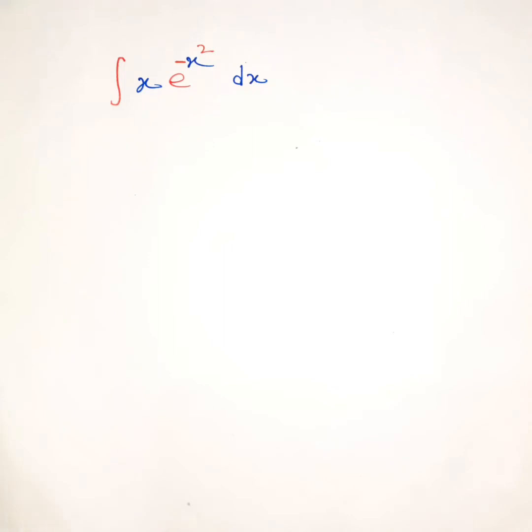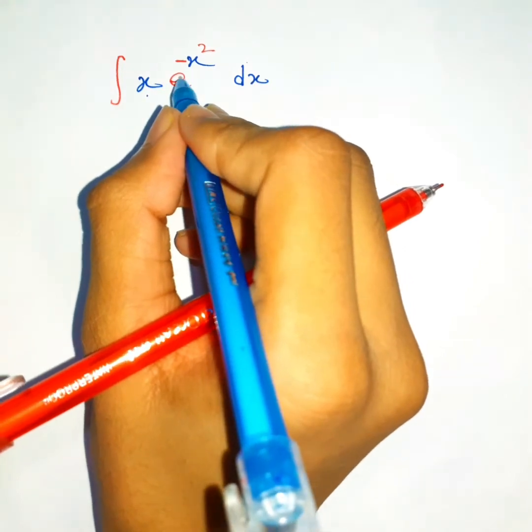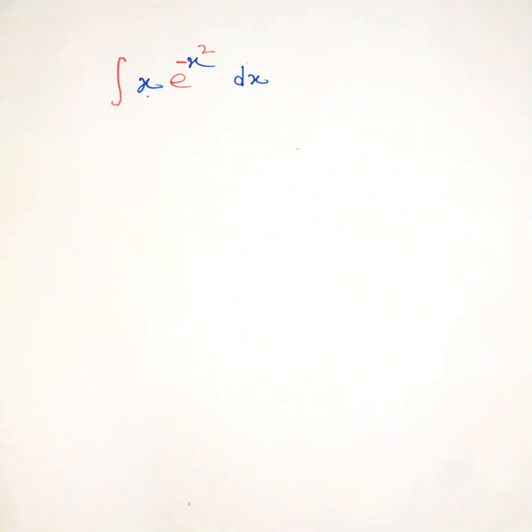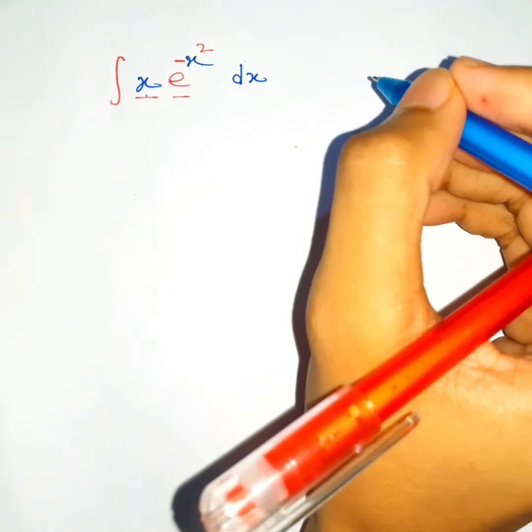Okay, thanks for watching. In this video we will be integrating x times e to the negative x squared dx. Notice this is the product of two functions, so can we use integration by parts to do this one?